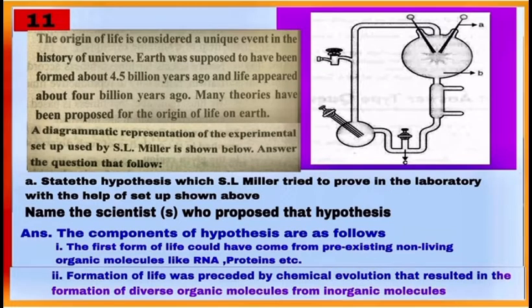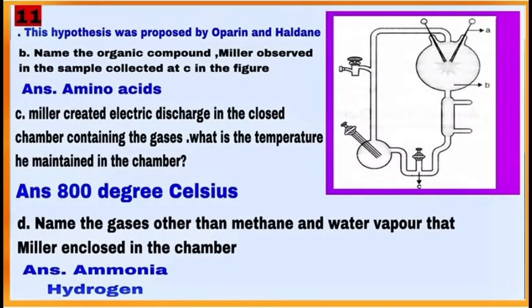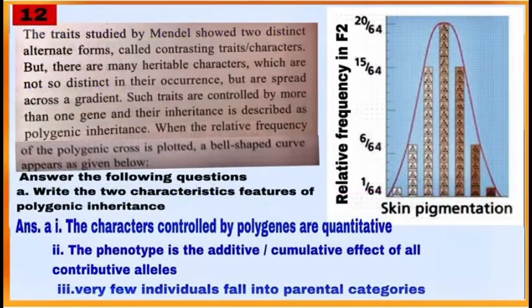Case-based question number 11 is based on the experimental setup used by S. L. Miller to explain the origin of life on Earth. Answer questions A, B, C, and D.